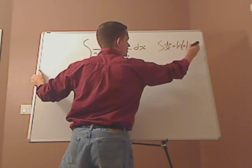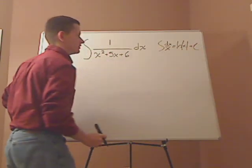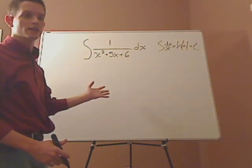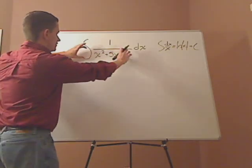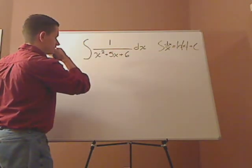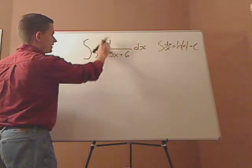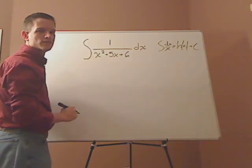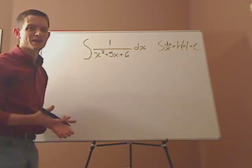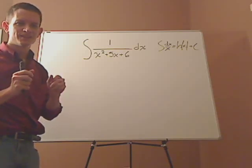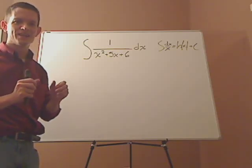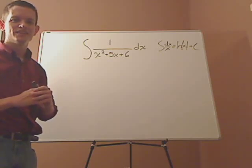You can't do that here because the derivative of this is 2x plus 5 and you don't see 2x plus 5 in the numerator. So what you have to do is a little manipulation and what you have to do here is partial fractions.